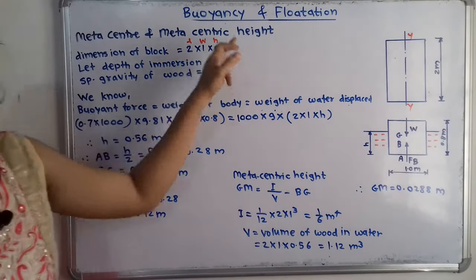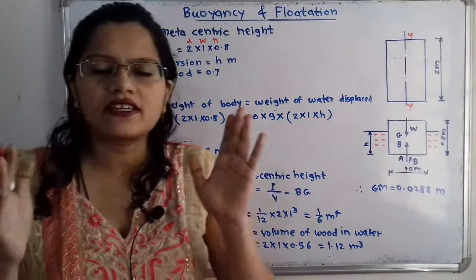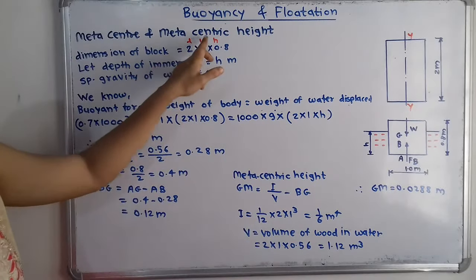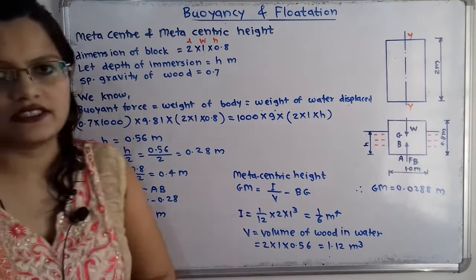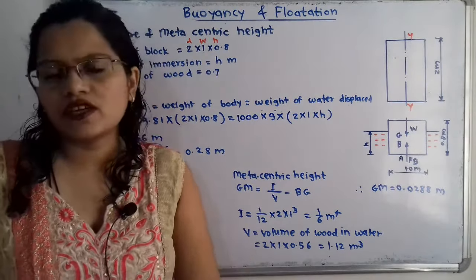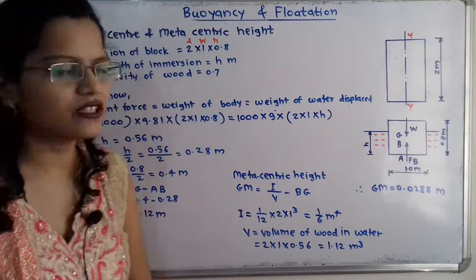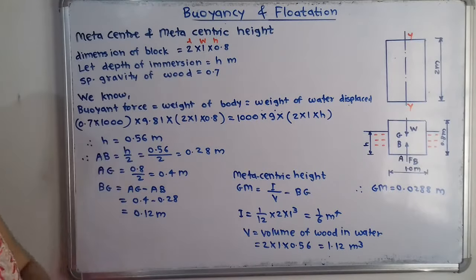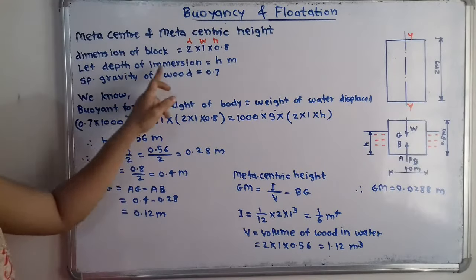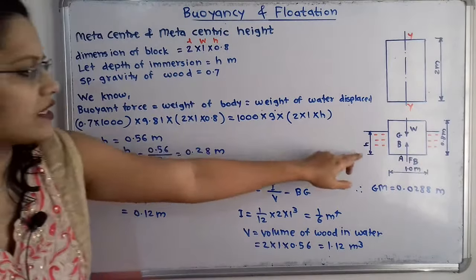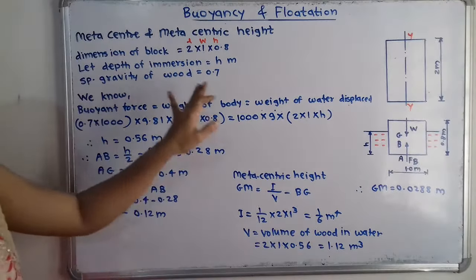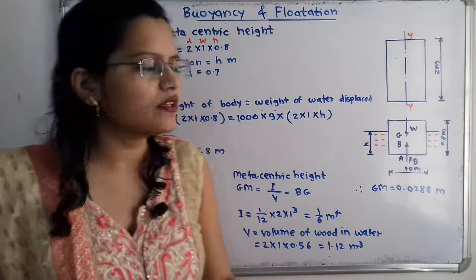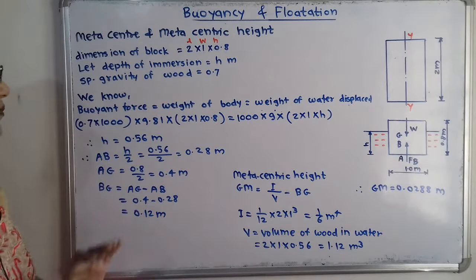For the given data: dimensions are length × width × height (2 m × 1 m × 0.8 m). The depth of immersion is H meters (unknown). The specific gravity of wood is 0.7.